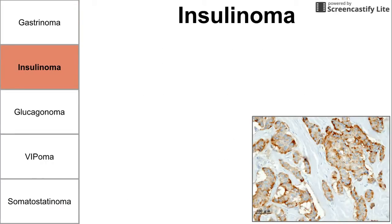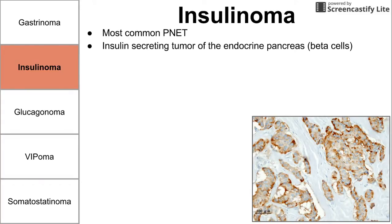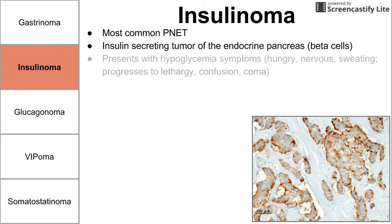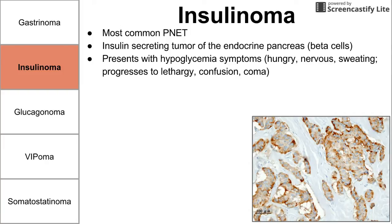Next we have insulinomas, which are the most common PNET. By definition they are insulin-secreting tumors of the endocrine pancreas, and they specifically come from the beta cells. They present with hypoglycemia symptoms because too much insulin is being released. These symptoms include hunger, nervousness, sweating, lethargy, confusion, and coma.